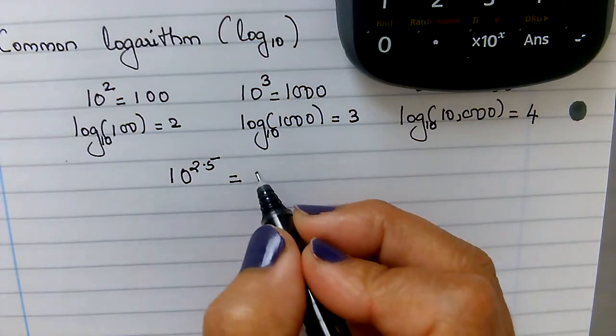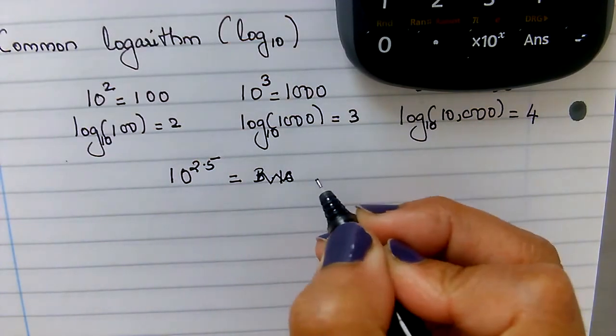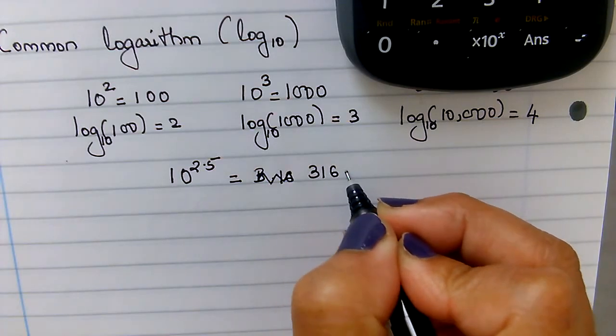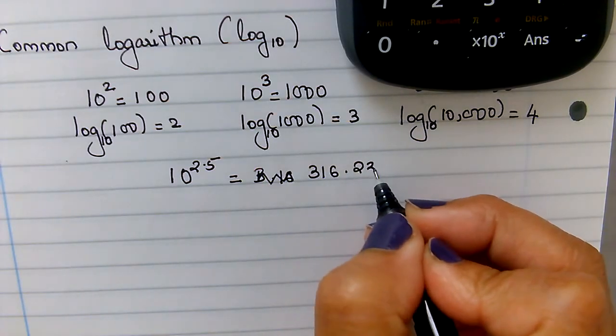So 316, what did I write like that? 316.227, I'm just making it 2.3.